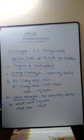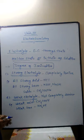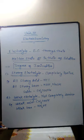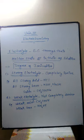Next are non-electrolytes. Non-electrolytes are those substances which do not conduct electricity in their molten state or in their aqueous condition. Examples include urea, glucose, sugar, etc.